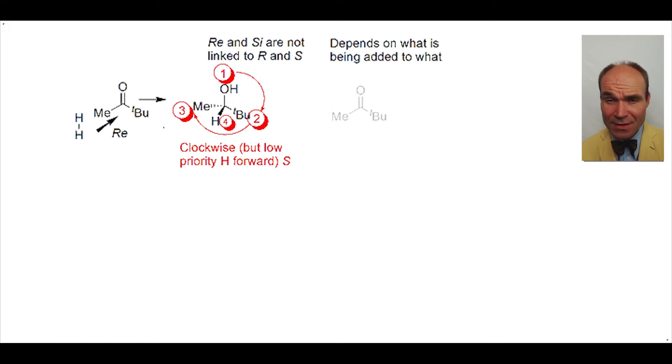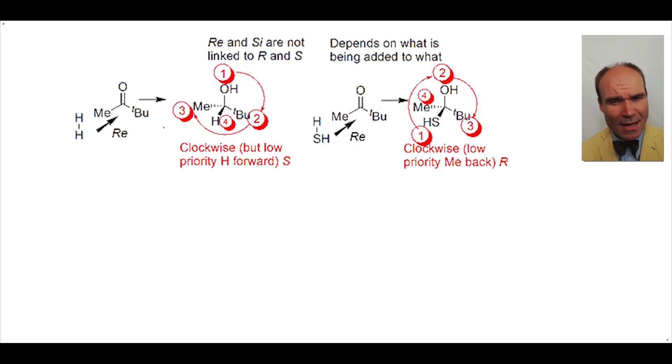What would happen if the same ketone is approached from the same face Re by hydrogen sulfide instead of hydrogen? If we prioritize the substituents on the product and consider the movement from highest priority to third highest priority we again observe a clockwise momentum. As the lowest priority group is backwards the clockwise direction results in an R descriptor. So same molecule attacked from the same face by different reagents can provide a different sense of stereochemistry in terms of R or S.